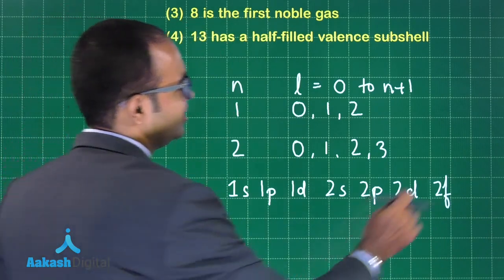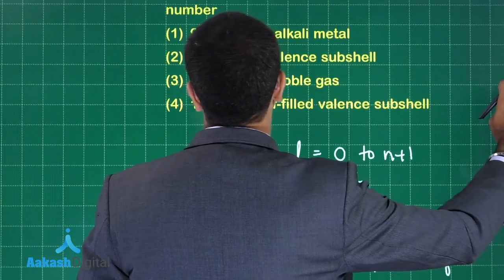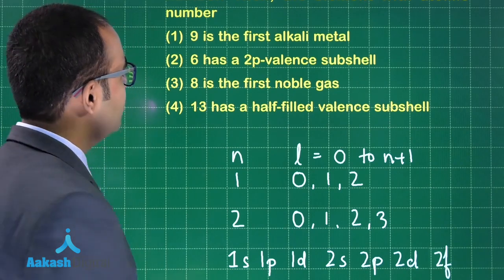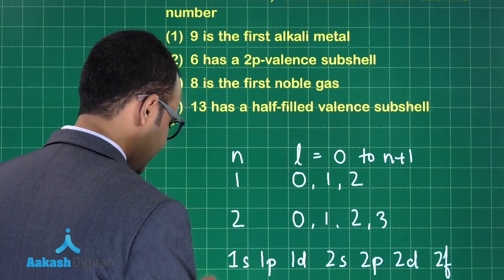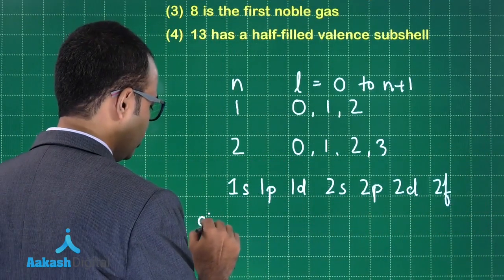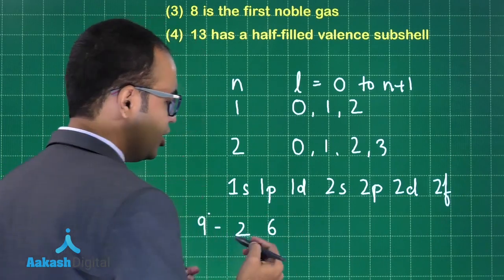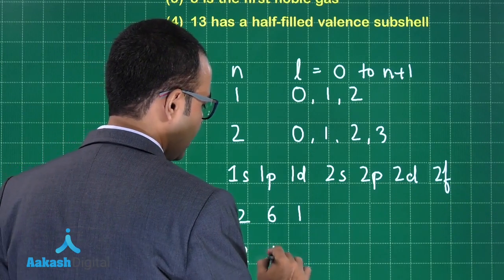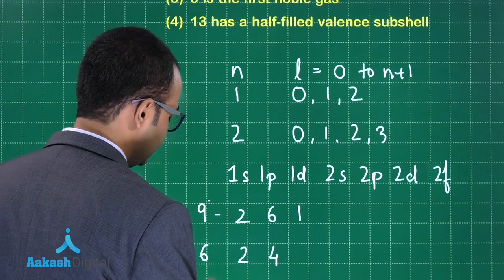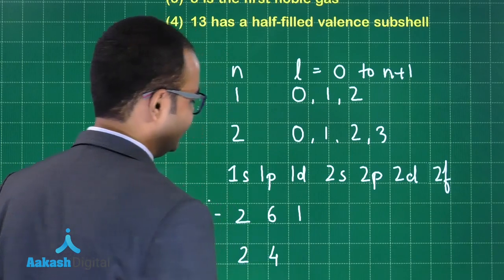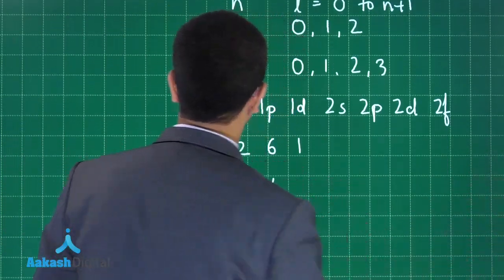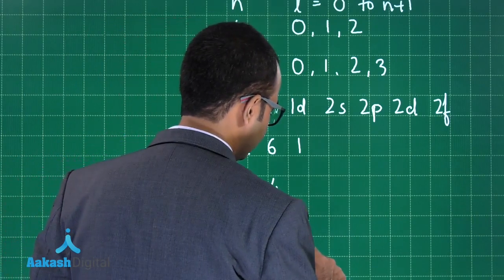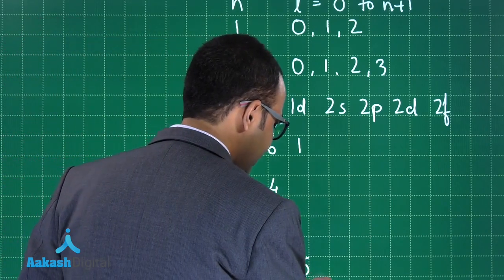Let us look at the options and the atomic numbers given. For atomic number 9: the distribution will be 1s², 1p⁶, and the remaining 1 electron goes into 1d — giving 1d¹. For atomic number 6: this gives 1s², 1p⁴ — that is 2 and 4. For atomic number 8: this gives 1s², 1p⁶. For atomic number 13: this gives 1s², 1p⁶, and 5 electrons remaining which go into 1d, giving a half-filled d subshell.